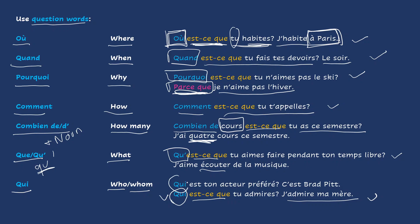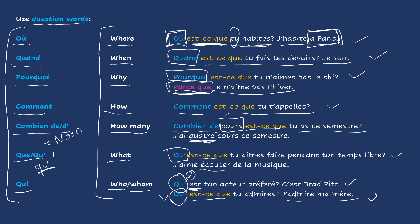Or the first example: Qui est ton acteur préféré? Who is your favorite actor? C'est Brad Pitt. It's Brad Pitt. And here you don't use est-ce que because the verb is directly placed after the question word. So you want to remember that just as in English, when you use those question words to ask specific questions, you are going to do the same in French to ask more specific questions.